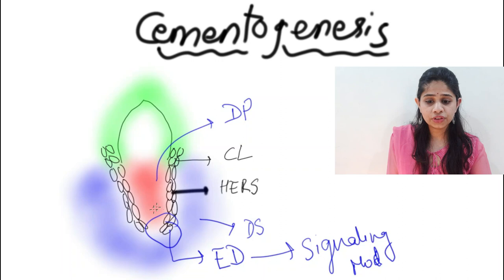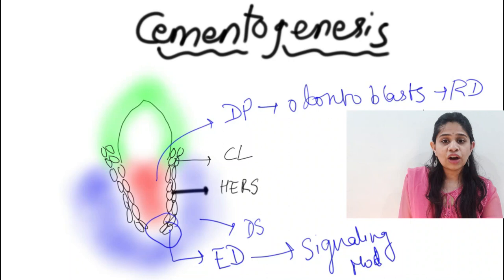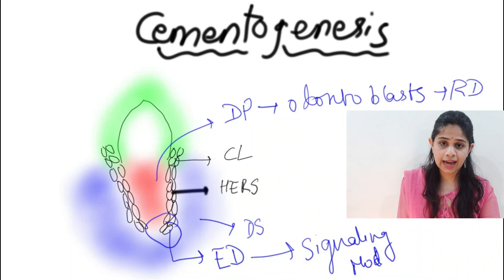These signaling molecules cause the cells of the dental papilla to undergo differentiation and form the odontoblasts, which further help in the secretion of radicular dentine. We have spoken in great detail about the dental papilla and the dental sac in the tooth development video.